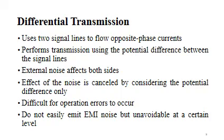The differential transmission method uses two signal lines to flow opposite-phase currents and performs transmission using the potential difference between the signal lines. External noise affects the positive and negative lines equally. Differential transmission considers only the potential difference between the signal lines, so the effect of noise is cancelled, making it more difficult for operation errors to occur. Differential transmission lines do not easily emit EMI noise, but a certain level of common-mode noise is unavoidable.